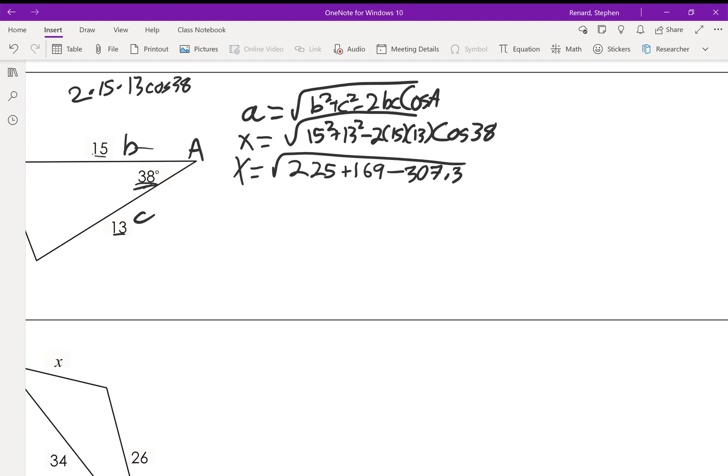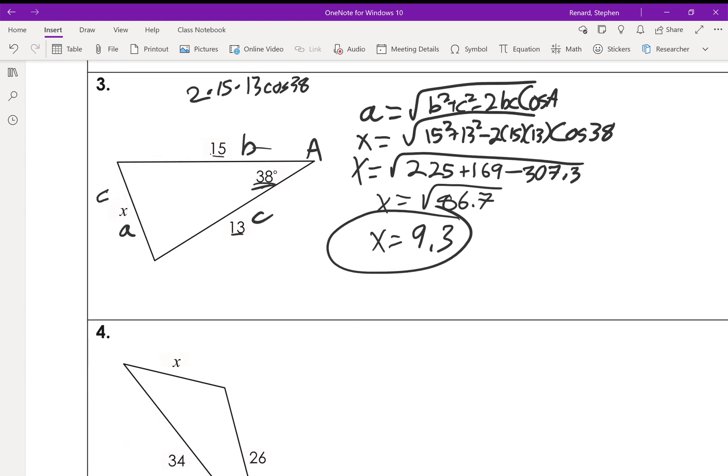So here we have x equals the square root of 86.7, which is 9.3 rounding to the nearest tenth. And so again, if this is 9.3, that kind of tracks with what we thought it was going to be as being the smallest of the three sides. So that's how you solve for a missing side when you have this kind of side angle side setup. You can use the law of cosines.